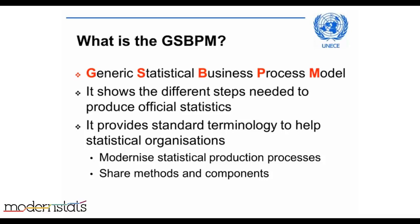One of GSBPM's biggest strengths is that it provides standard terminology to describe the different steps in statistical production. If we have standard terminology, it makes it much easier for statistical organizations to communicate both between organizations and, very importantly, within an organization. If we have the same description for a part of a statistical production process in economic statistics and social statistics, we can start to see where similarities may be and where there might be scope for rationalizing the number of tools or methods used, helping with the sharing of methods, tools, and ideas between and within statistical organizations.